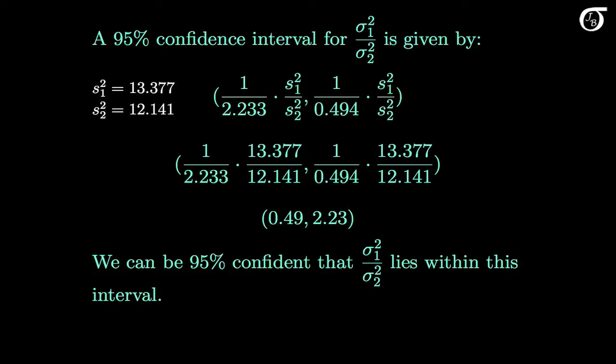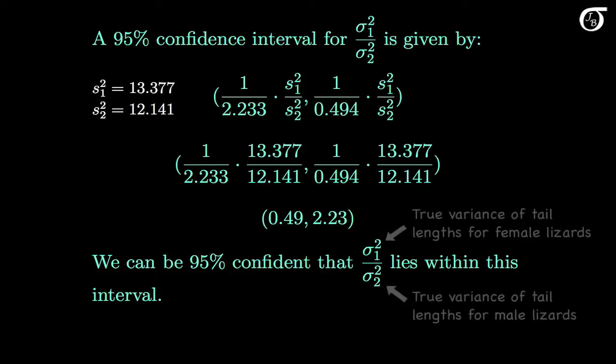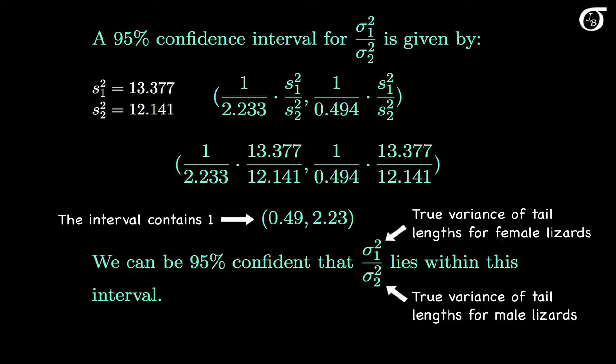In other words, we can be pretty confident that sigma 1 squared, which represents the true variance of tail lengths for female lizards, lies between roughly 1 half of sigma 2 squared and double sigma 2 squared, where sigma 2 squared is the true variance of tail lengths for male lizards. And this applies only to the particular species of lizard that we sampled. An important point to note here is that this interval contains 1, and thus it is plausible that sigma 1 squared over sigma 2 squared equals 1. So this interval doesn't give any evidence of a difference in population variances. That shouldn't be too surprising since the sample variances were so close.